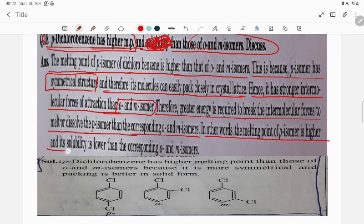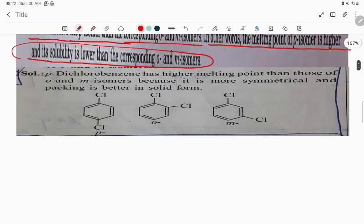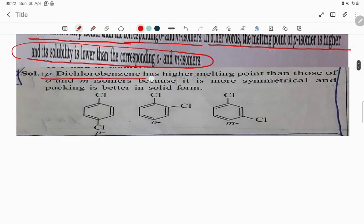Of the para isomer is higher. Its solubility is lower than the corresponding ortho and meta isomers. We are not discussing solubility here. Let us see, student.